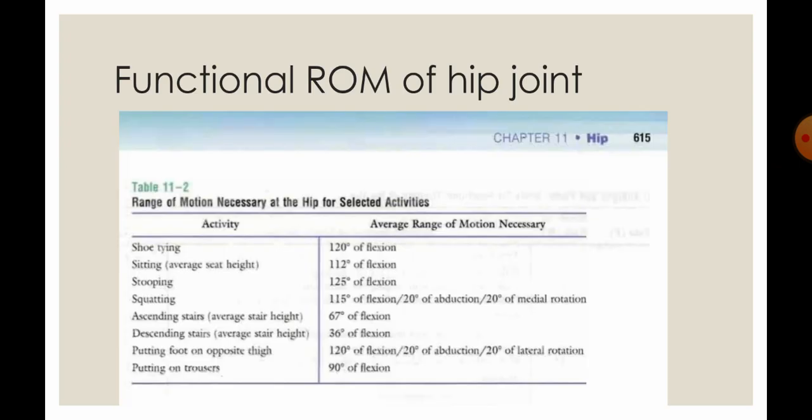What is the functional range of motion for the hip joint? For shoe tying, you require 120 degrees of hip flexion. For sitting, you require 112 degrees of knee flexion. For stooping, you require 125 degrees of flexion. For squatting, you require 115 degrees of hip flexion, 20 degrees of abduction, and 20 degrees of medial rotation. For ascending stairs, you require 67 degrees of flexion.